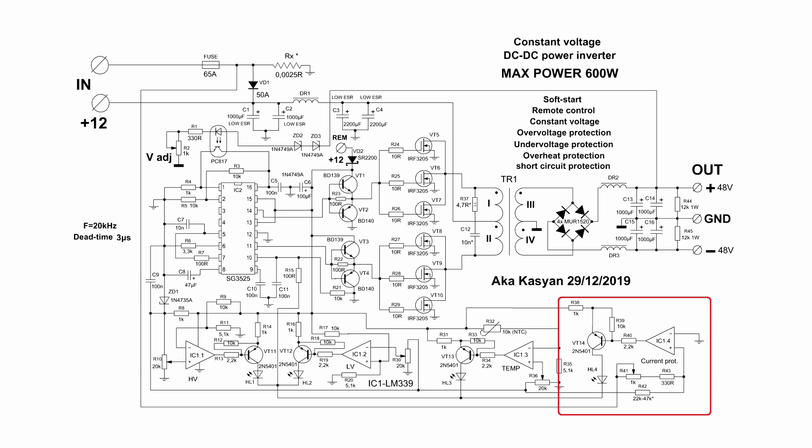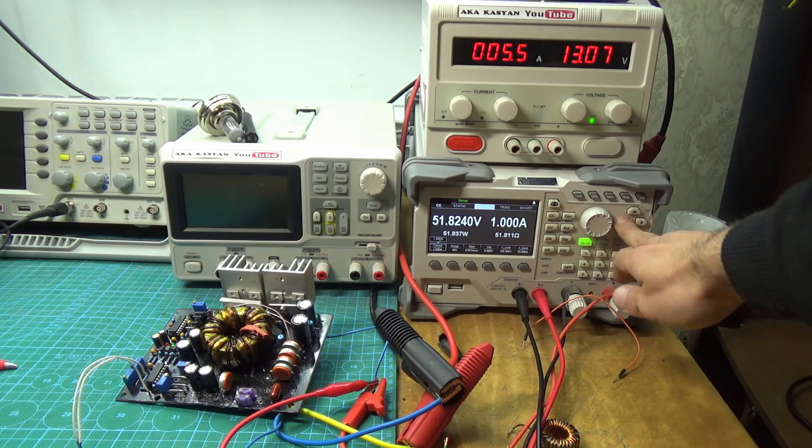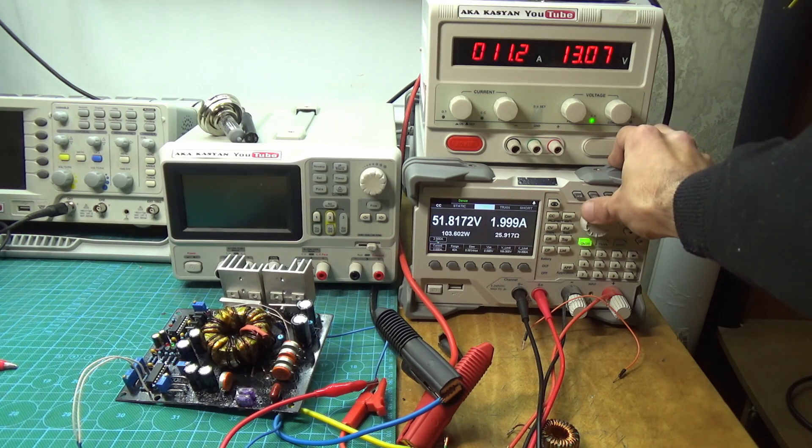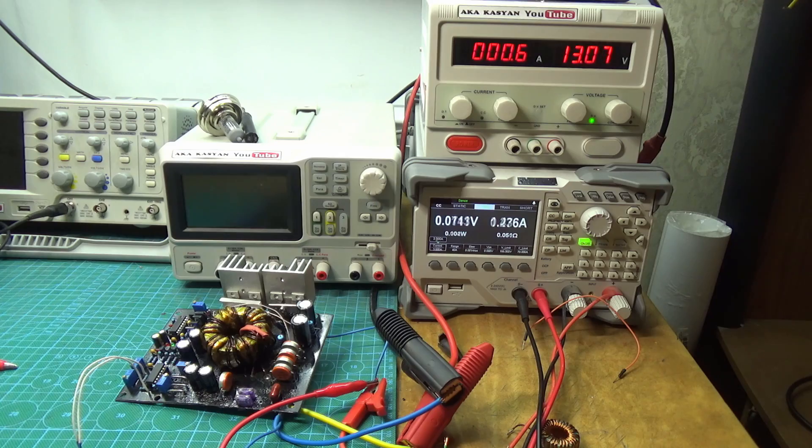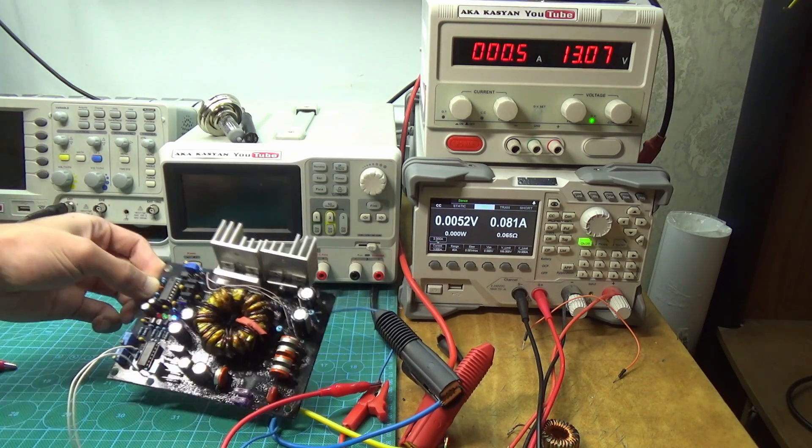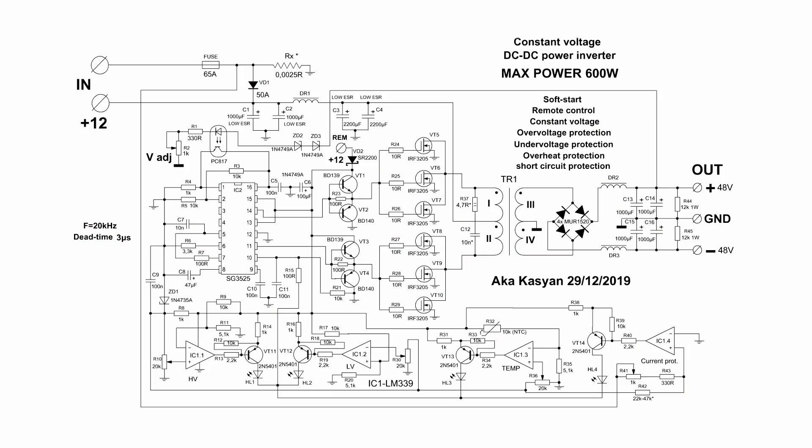Short circuit protection works the same way. But in this case, the comparator monitors the voltage drop across the shunt. Here is more clearly. The converter output is loaded with electronic load. So, we slowly increase the current and at a certain previously set value of the current, the output voltage will abruptly disappear and the inverter will turn off. The protection has worked.